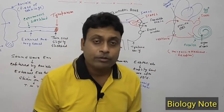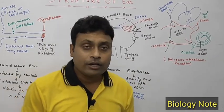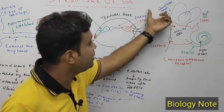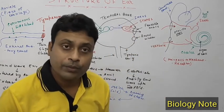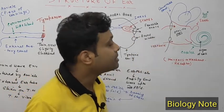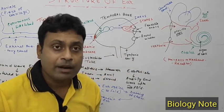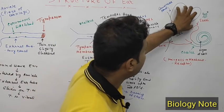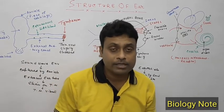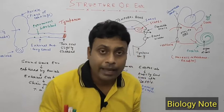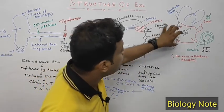The internal ear contains three important structures: the semicircular canals, the vestibule, and the cochlea. The semicircular canals are semi-circular structures, and there are three of them arranged perpendicular to each other. In the vestibule, an important organ called the otolith is present, which is the organ of balance and helps us maintain balance in our body.